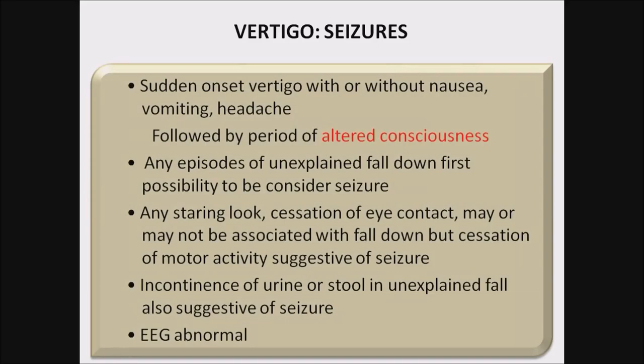Seizures: sudden onset of vertigo with or without nausea, vomiting, and headache, followed by a period of altered consciousness. Altered consciousness is very important in seizures — there must be altered consciousness. Any episode of unexplained fall is first considered to be a seizure in children. Any staring look or suggestion of eye contact, with or without fall, but with suggestion of motor activity, is suggestive of seizure. Incontinence of urine or stool in unexplained falls in children is also suggestive of seizure.